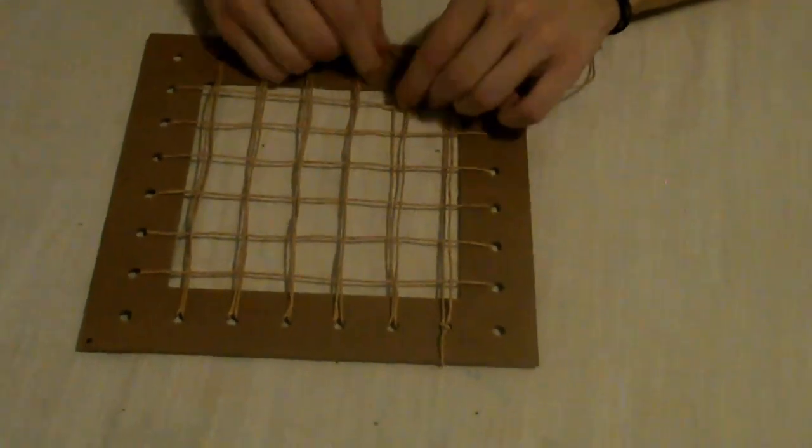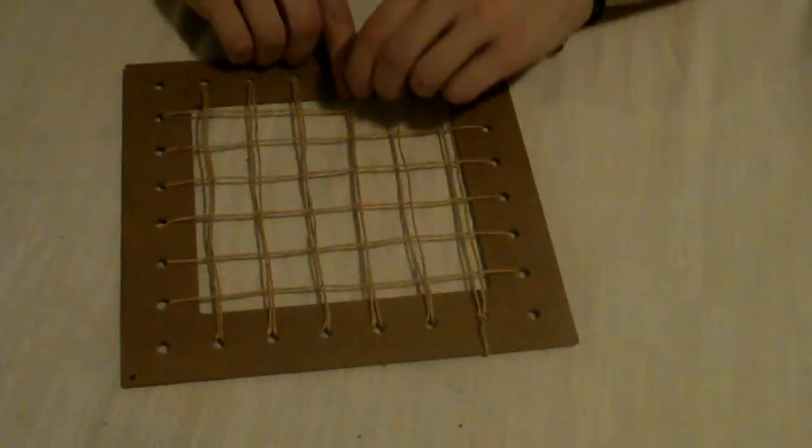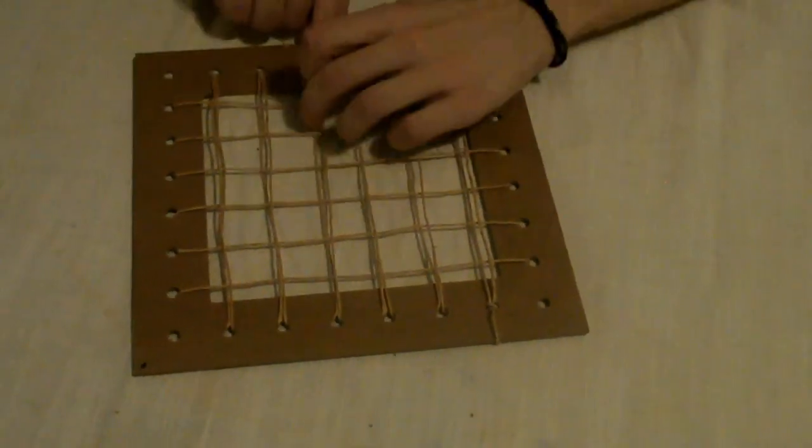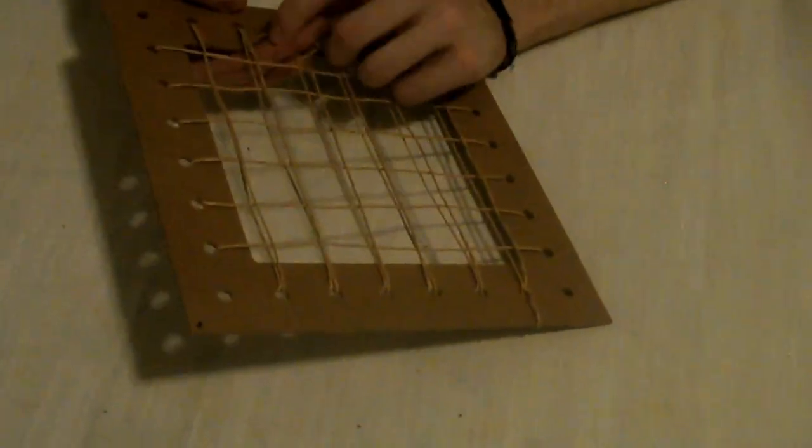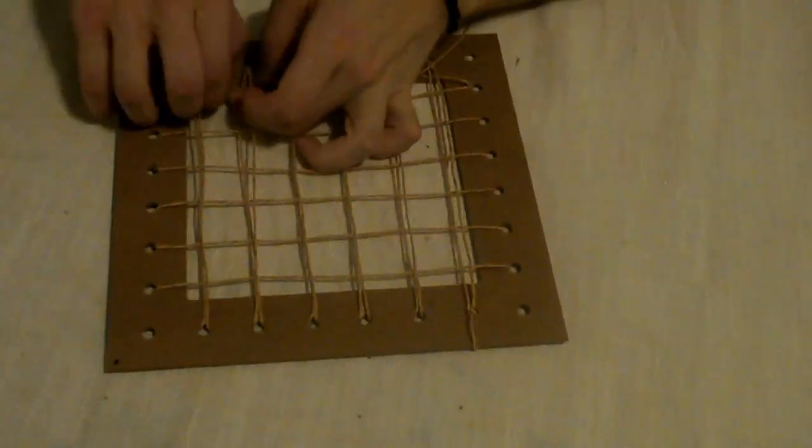Next, weave a second set of horizontal supports. Beginning with hole number 2, lace diagonally through hole number 23. This time, as you lace to hole 24, weave over one vertical support and under the next. Continue to create the pattern shown.